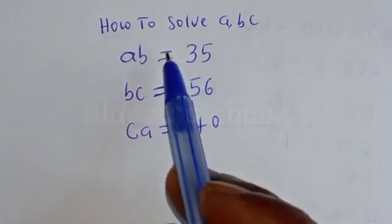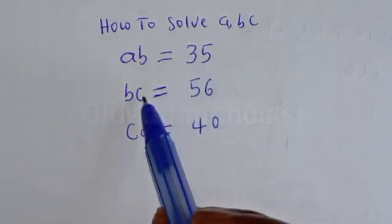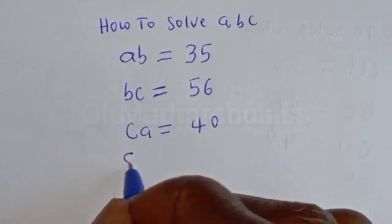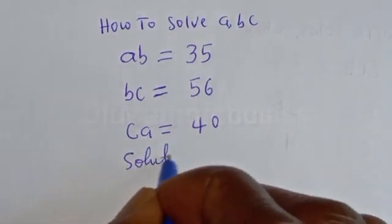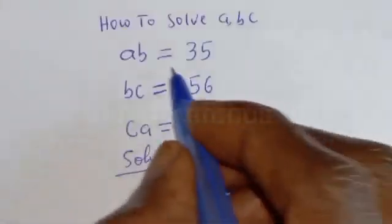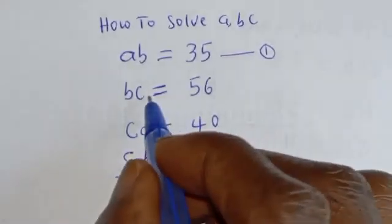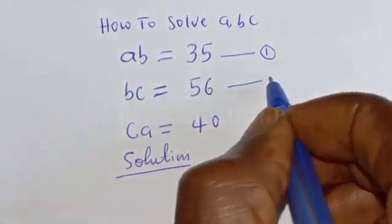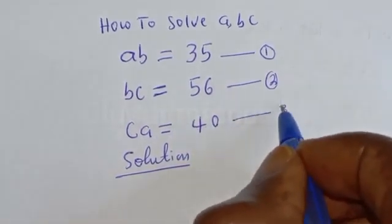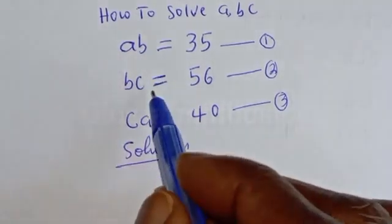How to solve A, B, C from this given equation: AB is equal to 35, BC is equal to 56, and CA is equal to 40. Let's call AB=35 equation 1, BC=56 equation 2, and CA=40 equation 3.